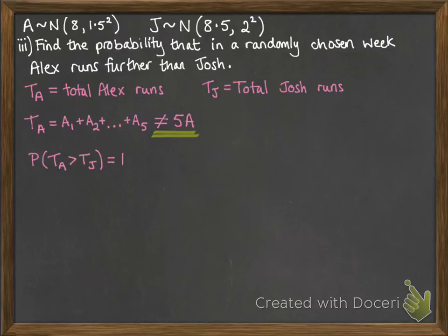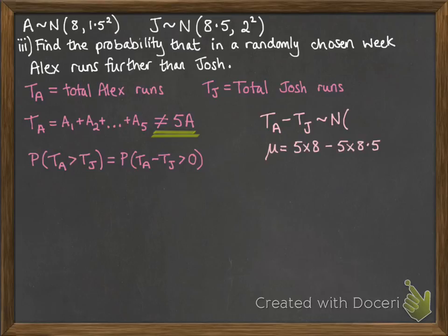The probability that the total Alex runs is greater than the total Josh runs is the same as saying the probability that the total for Alex minus the total for Josh is greater than 0. Now thinking about the distribution of TA minus TJ, it's normally distributed. The means will be 5 lots of 8 minus 5 lots of 8.5, straightforward. And the variance will be 5 times 1.5 squared, so that's 5 lots of Alex's variance squared. Now notice we're not squaring the 5 because it's doing five separate instances of his distance, not 5 times bigger one of his distances. The 5 does not get squared. We're going to add together, and again remember your variances must be added even though we're doing TA minus TJ. And then the same with Josh, the 5 times 2 squared where the 5 is not being squared. So we get our variance of 31.25.